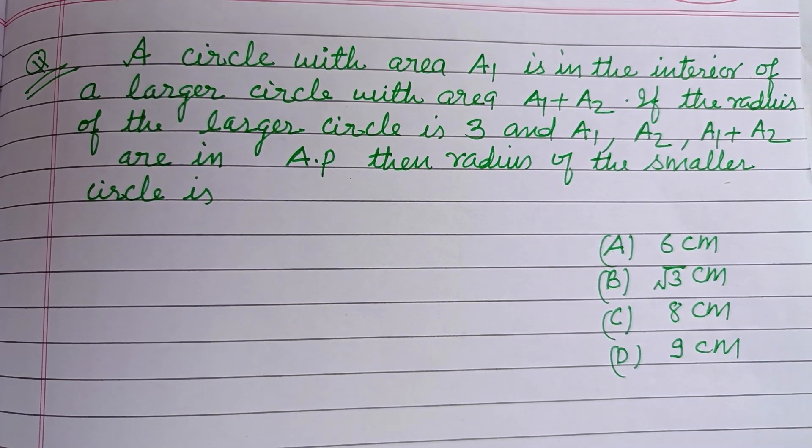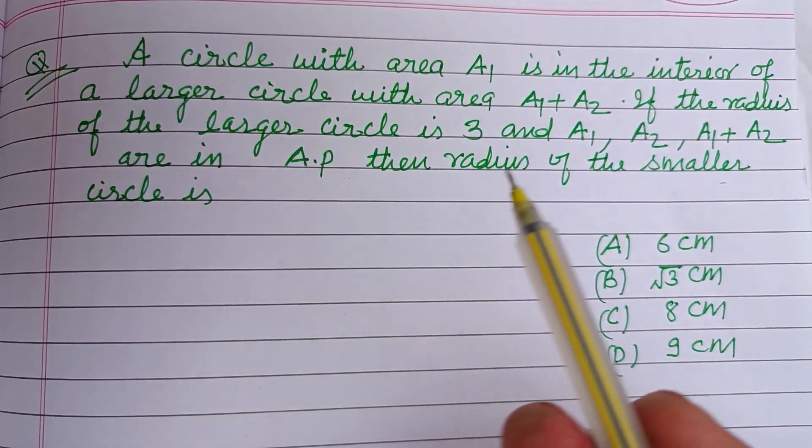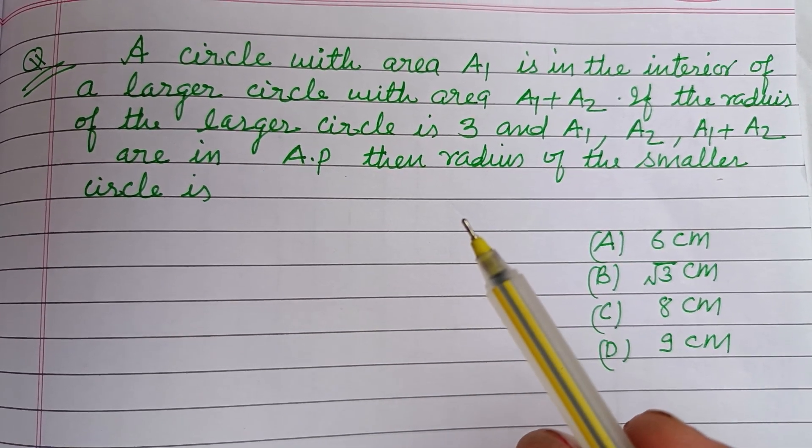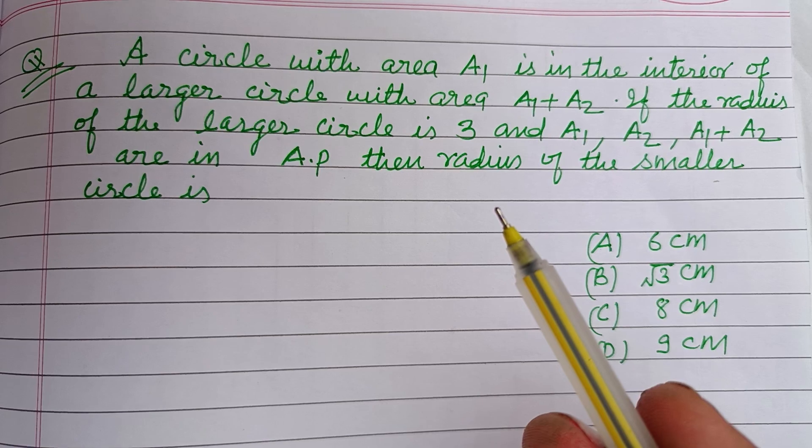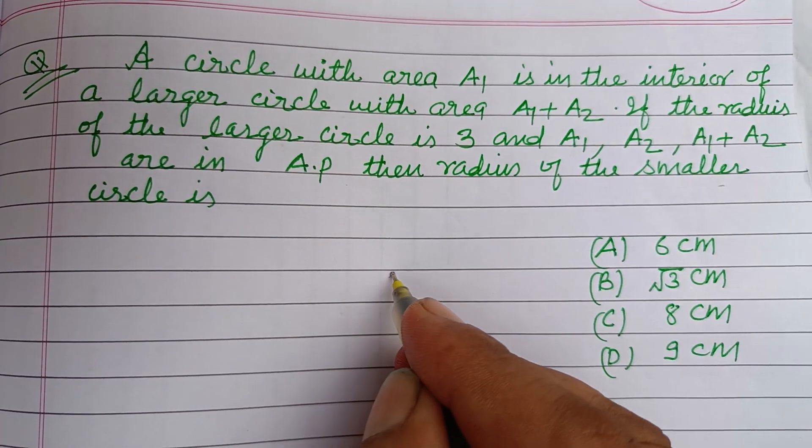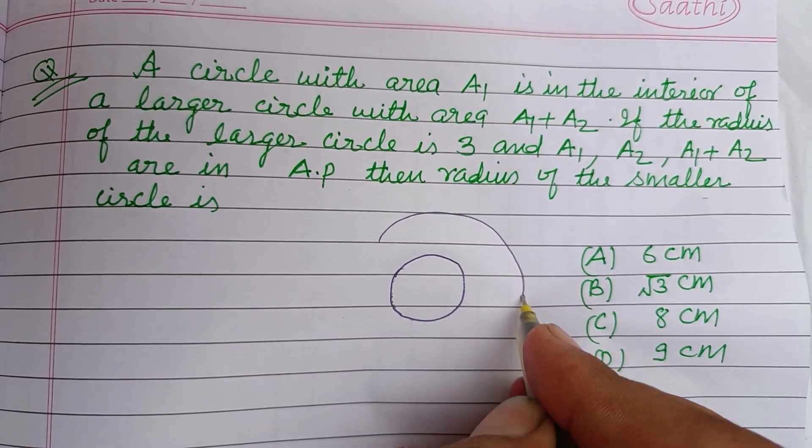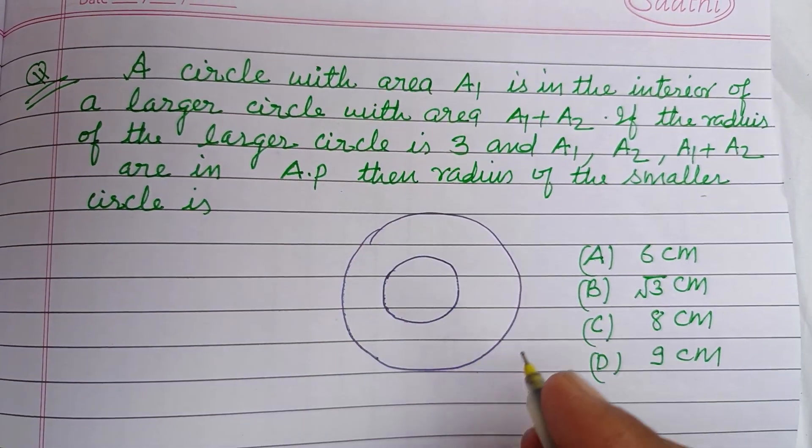Hello viewers, warm welcome to this YouTube channel. A circle with area A1 is in the interior of a larger circle with area A1 plus A2. So here is a circle and it is interior to another circle.